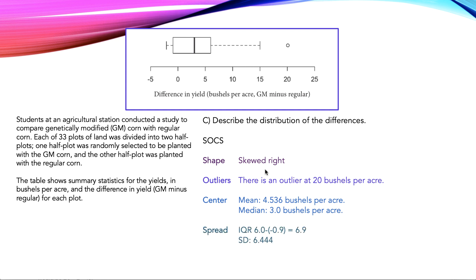And then we have the spread. So the two better ways of measuring spread is the interquartile range. The third quartile was 6.0, the first quartile was negative 0.9, so I got 6.9. Or I just pulled the standard deviation from the table. So you would have to have all four of these for you to get full credit on this part.